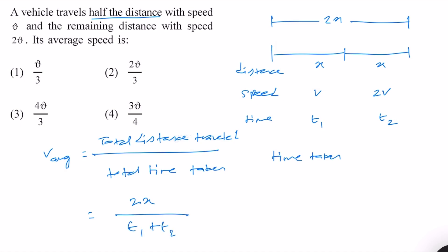Time taken is equal to distance traveled divided by speed. Therefore, t1 is equal to x by v and t2 is equal to x by 2v.